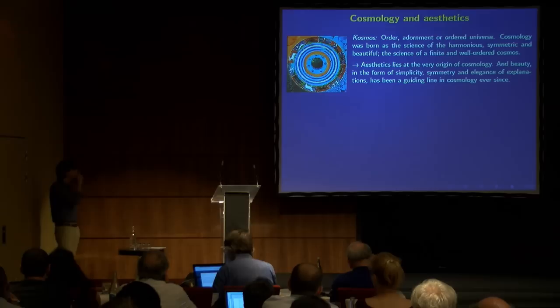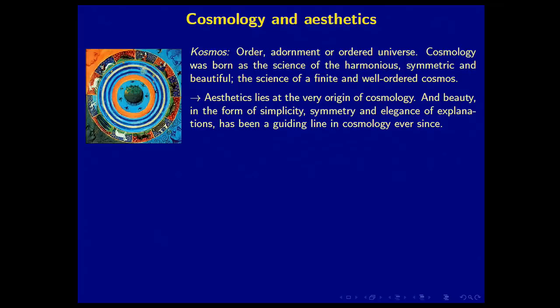Now this project, we laugh about it today, the music of the spheres, but even Kepler pursued this project many, many years later. And that might even have helped him to his third law. Anyway, the point is that cosmology was born as the science of the harmonious, the symmetric and the beautiful, the science of a finite and well ordered cosmos. And not only was cosmology born like that, but modern science was born like that. Because the idea behind modern science is that we can actually capture things in a nice orderly symmetric, maybe not symmetric, but at least a nice finite and orderly way. We can describe the whole universe as we saw, as I commented on Plato in the beginning. Plato takes over a lot of Pythagoras's ideas, in fact. So aesthetics lies at the very origin of cosmology and even in the definition of the world. And beauty in the form of simplicity, symmetry and elegance of explanation has been a guiding line in cosmology and in science ever since. Many of you have referred to beauty and there are numerous books on fundamental physics and cosmology where aesthetic criteria are all over the place, not least in string theory.